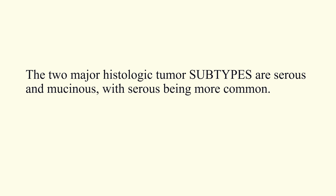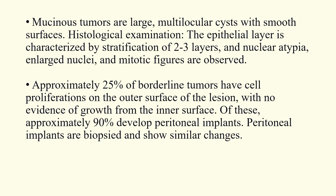The two major histological tumor subtypes are serous and mucinous, with serous being more common. Mucinous borderline tumors are large multi-locular cysts with smooth surfaces. Histological examination shows the epithelial layer is characterized by stratification of two to three layers, with nuclear atypia, enlarged nuclei, and mitotic figures observed. Approximately 25 percent of borderline tumors have cell proliferations on the outer surface of the lesion.